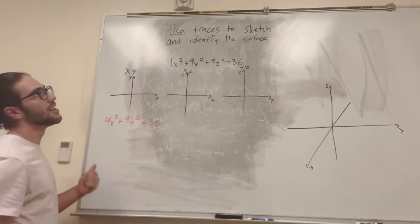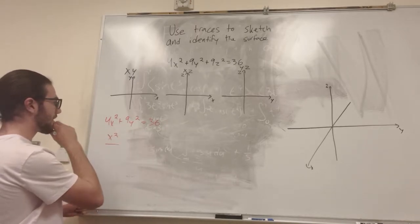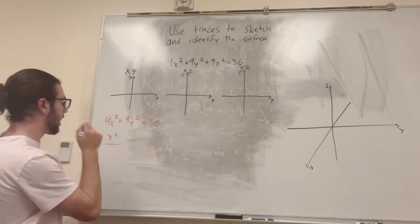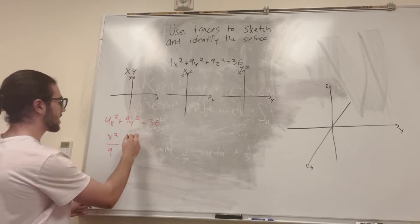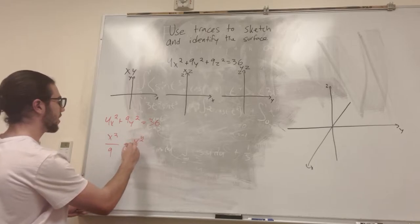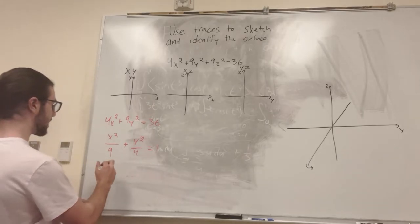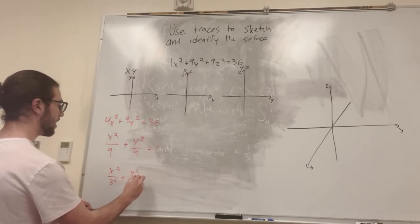So 4 divided by 36 - that's going to be x squared over 9, right? Plus 9 divided by 36 is 4, so it's going to be y squared over 4 equals 1. So now we can go even further. We can say x squared over 3 squared plus y squared over 2 squared equals 1.